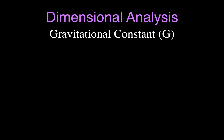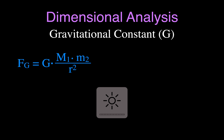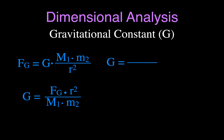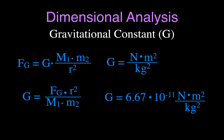The first one is the gravitational constant G, which comes from Newton's Law of Universal Gravitation. That law states that the force of gravity equals the gravitational constant times the mass of one object times the mass of the other, divided by the square of the distance between them. Solving for G, we get force times distance squared divided by the two masses. Plugging in units, that gives us Newton·meters²/kilograms². In fact, G equals 6.67 × 10⁻¹¹ N·m²/kg².